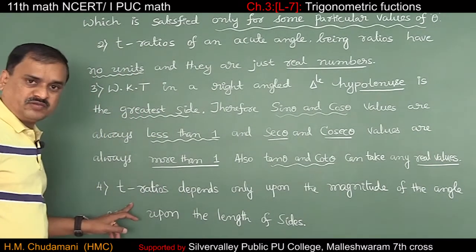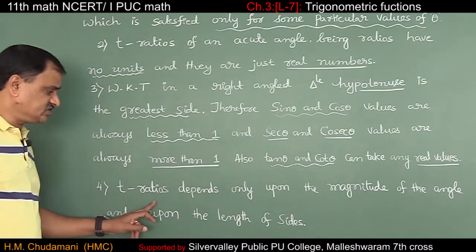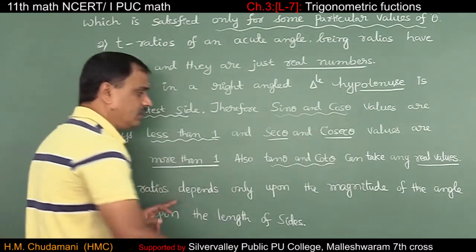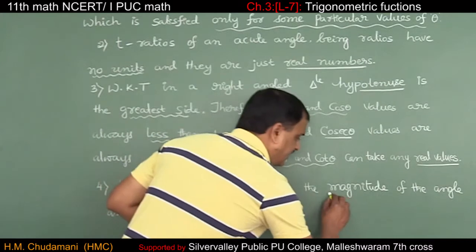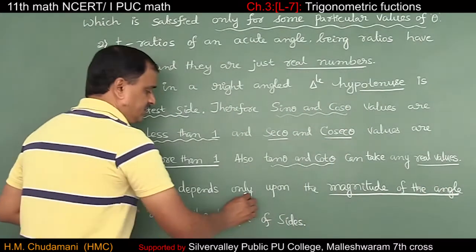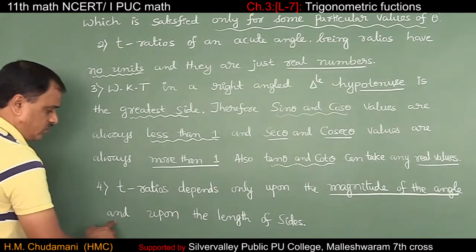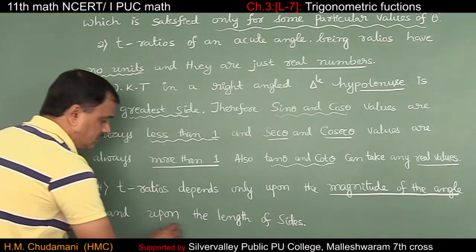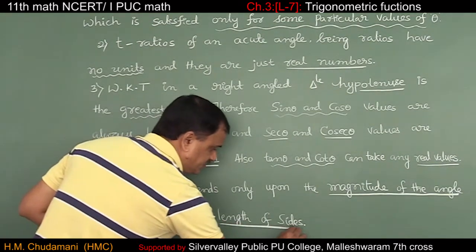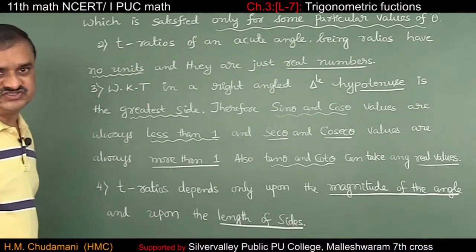Note number 4: trigonometric ratios depend only upon the magnitude of the angle and the length of the sides.